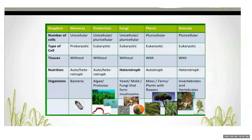In this summary: kingdoms are Monera, Protista, Fungi, Plantae, and Animalia. Monera is unicellular. Protista is unicellular or pluricellular (multicellular). Fungi is also unicellular or pluricellular. Plantae is most pluricellular — it has multicellular cells. Animalia is also pluricellular with multicellular cells.